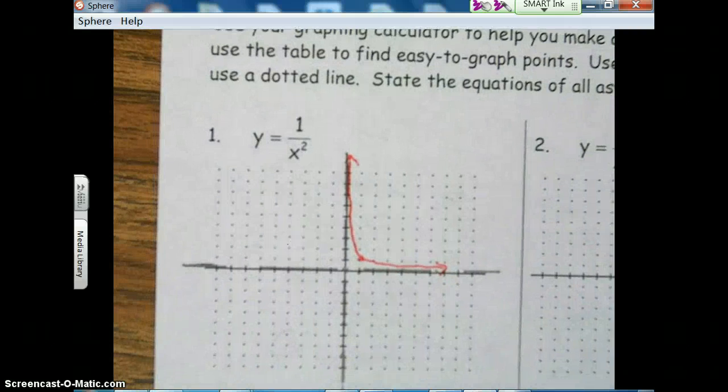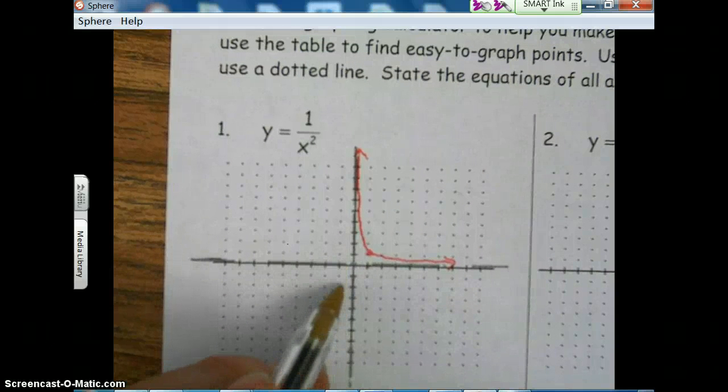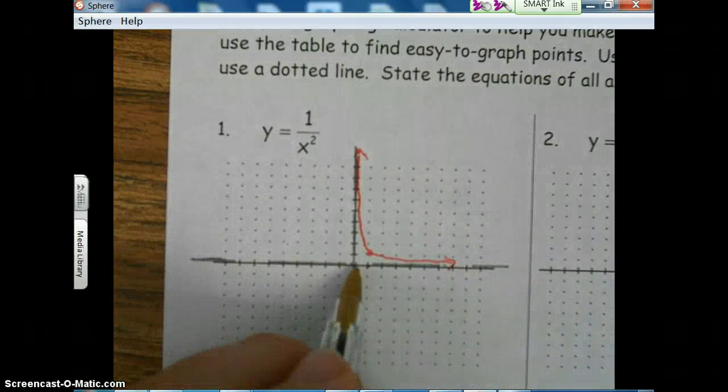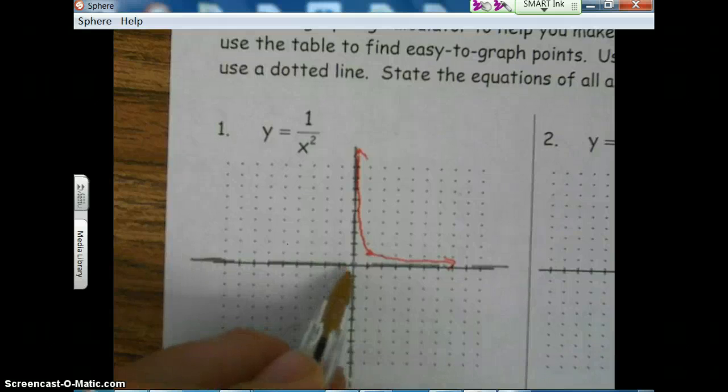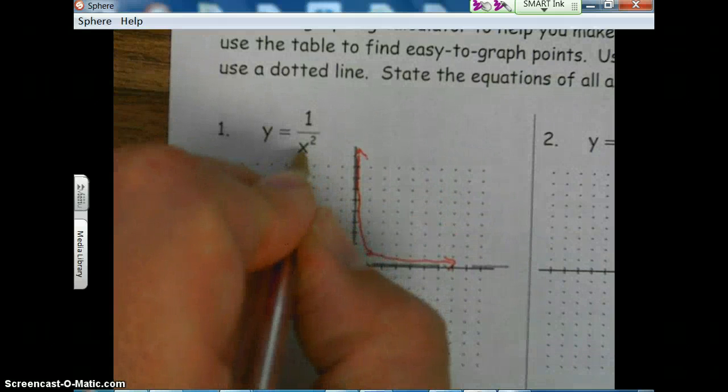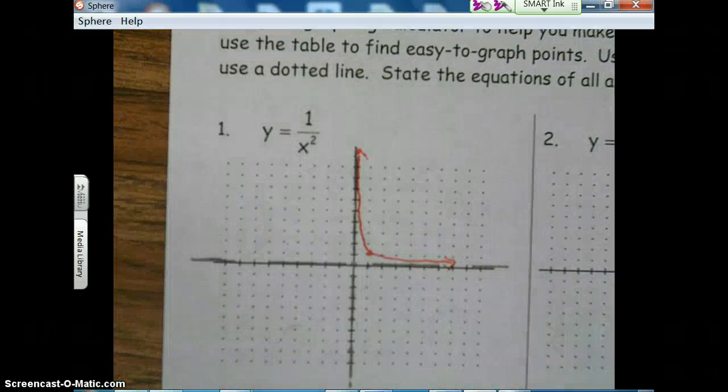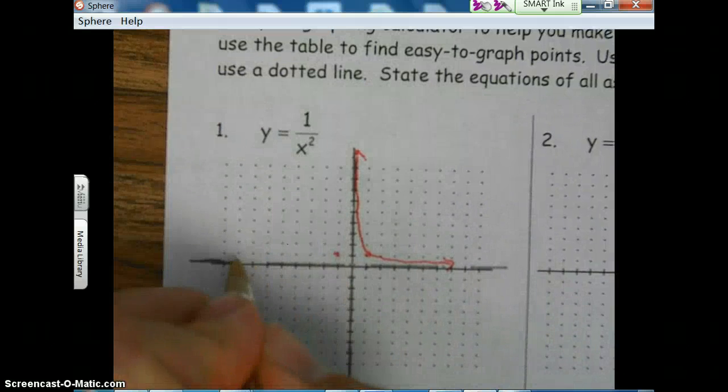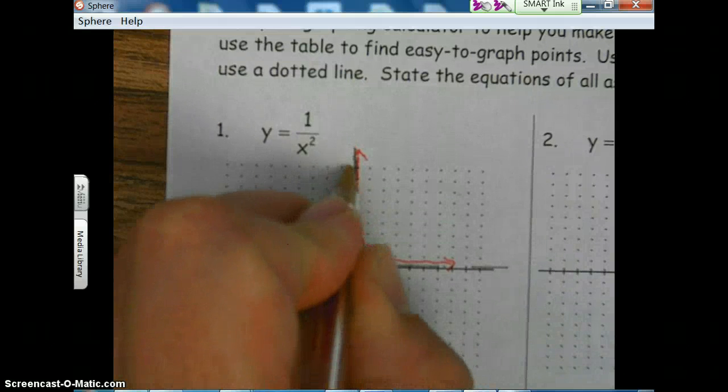Now, the previous parent, we went left one and we went down one. This parent, if we go left one, that's going to be negative one. If I plug a negative one in here, I get negative one squared, which is one, and one divided by one is one. So we're going to go left one up one. So this parent looks like this.